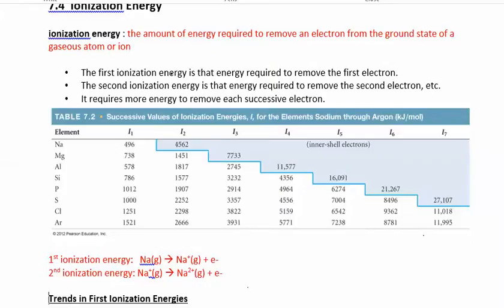The first ionization energy is how much energy it takes to remove the first electron, and the second ionization energy is how much it takes to remove the second one, and so on. For sodium, removing one electron gives you sodium plus, and from the table, I1 costs 496 kJ per mole. There's a huge jump from the first to the second ionization energy — it always costs more to remove the second electron than the first.